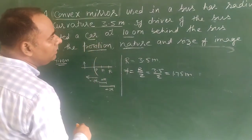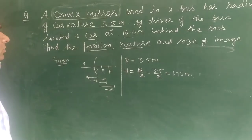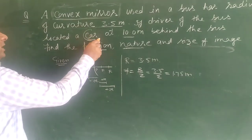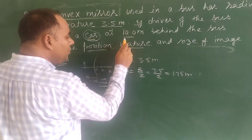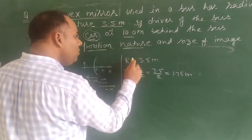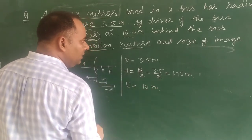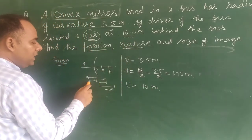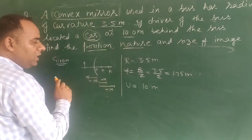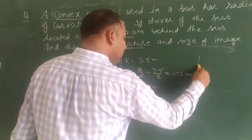Next, the car is located 10 meters behind the bus. This car acts as the object. The position of the object is 10 meters, but by sign convention the object distance u is negative. So u equals minus 10 meters.